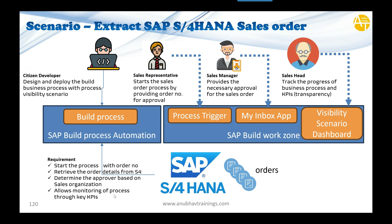We will determine the approver based on the sales organization of that order, and then configure process KPIs. KPI stands for Key Performance Indicator. For example, a student's KPIs are how many hours they study, their marks in mathematics and English, punctuality, and overall attendance percentage — success is measured based on these. Similarly, a sales department's KPIs are total sales, net sales, and net profit. If someone wants to analyze these KPIs, they need a dashboard.